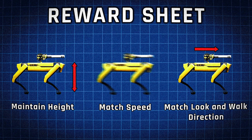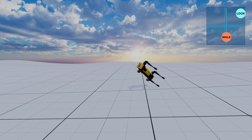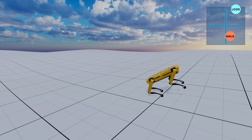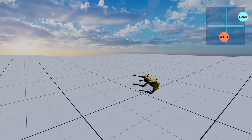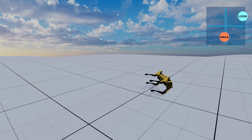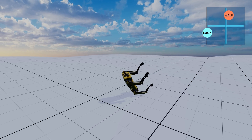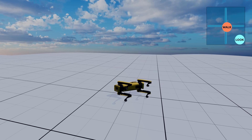These are the parameters which our agent will be rewarded for. Unlike the previous simulations on this channel, there is no penalty for falling over. Instead, we reward the agent for maintaining a specific height and inclination. This helps the AI stay upright and recover from falling. Every episode, the target speed, walking, and looking direction will be randomized. A random kick force will also be applied every so often.